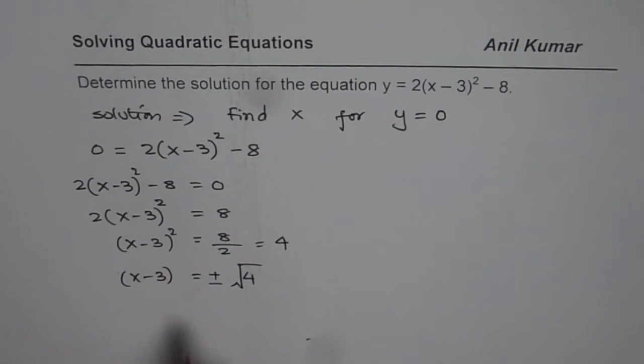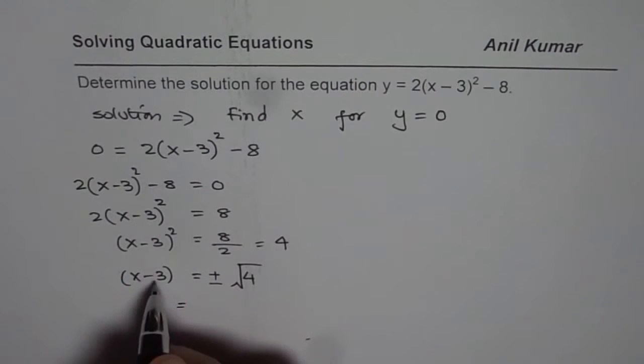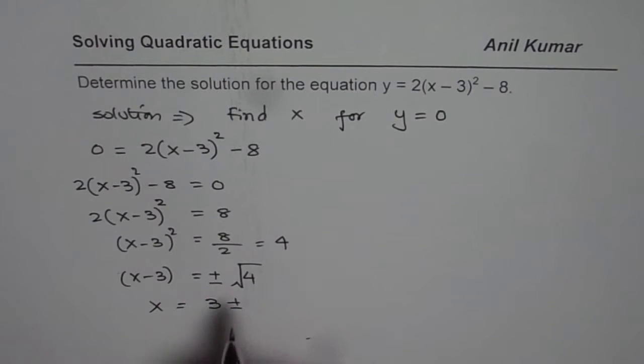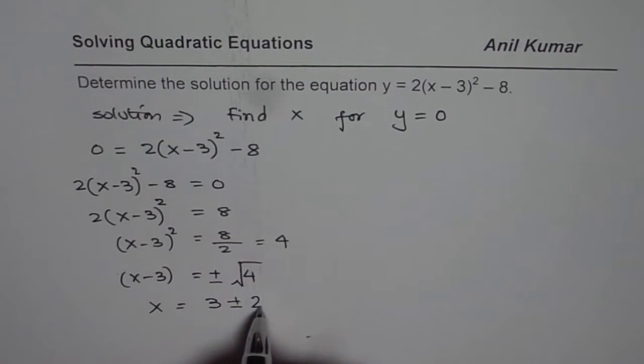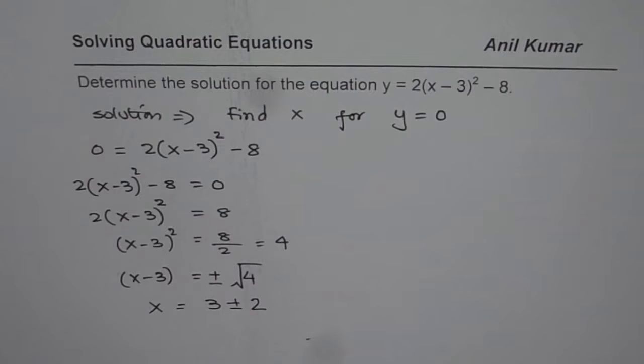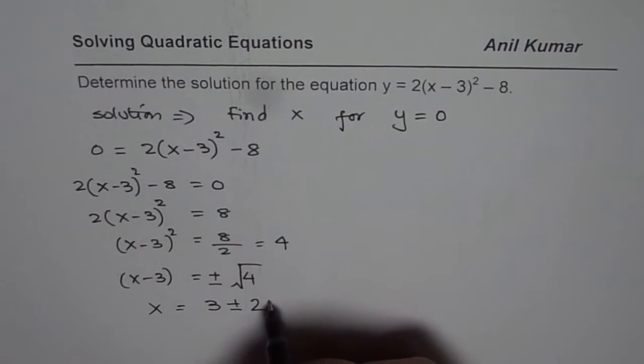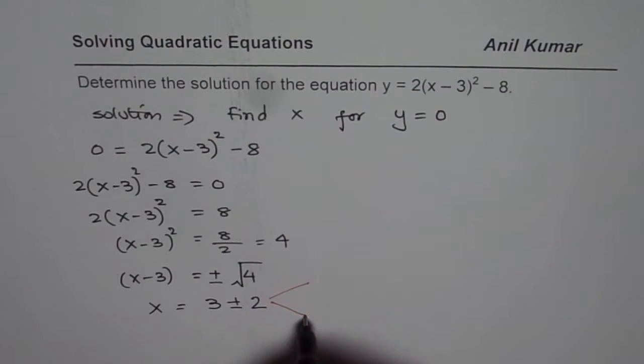Now you can bring 3 to the right side. So you get x equals, when you bring 3 to the right side, you get 3 plus and minus. Square root of 4 is 2. So you get 2 possible solutions. So if I use plus, then I get one answer. If I use minus, I get the other answer.